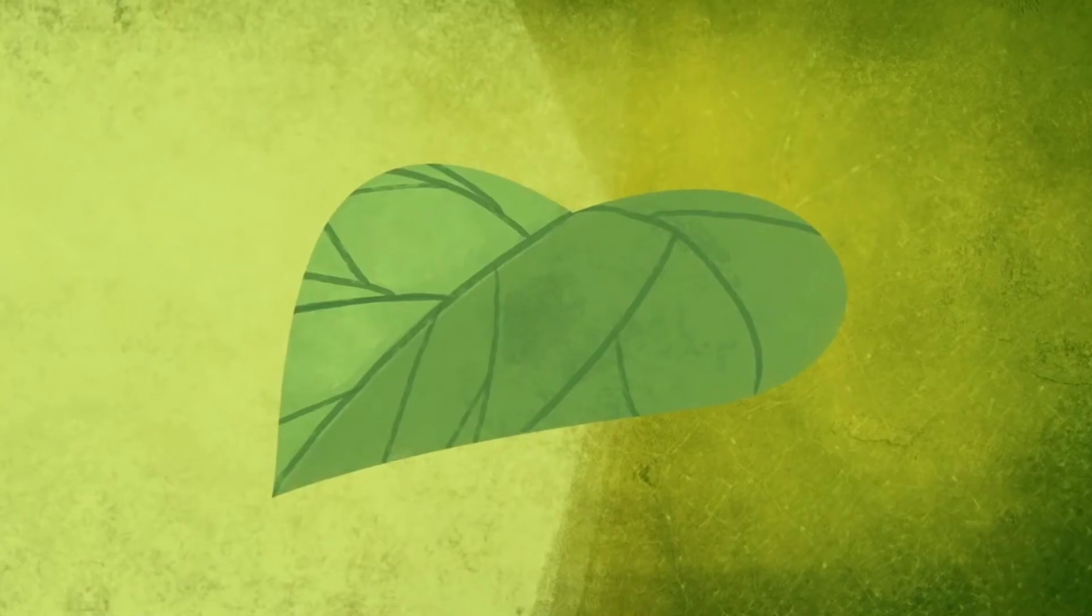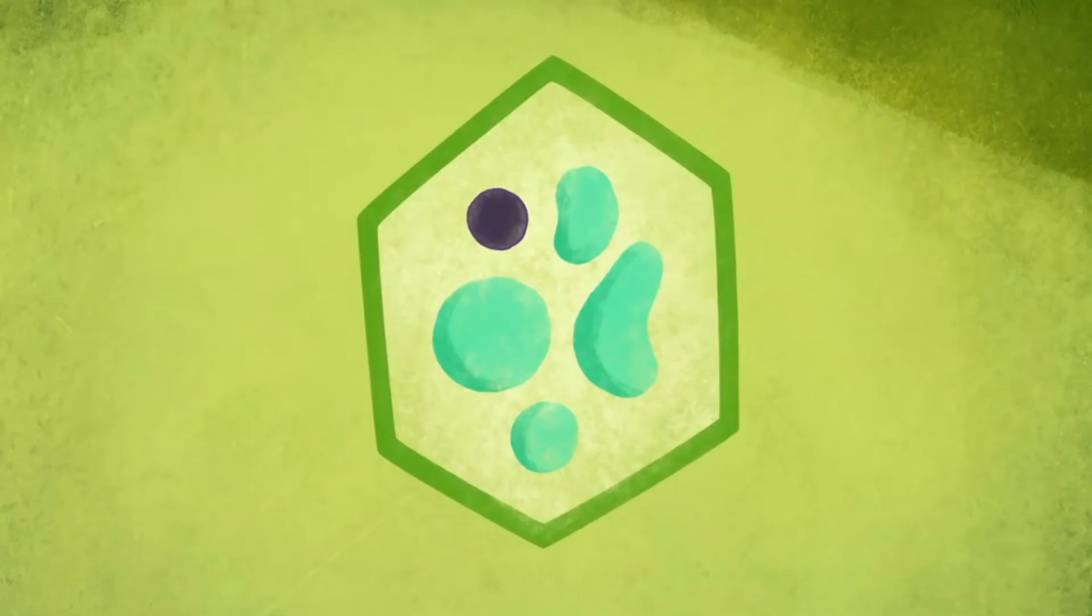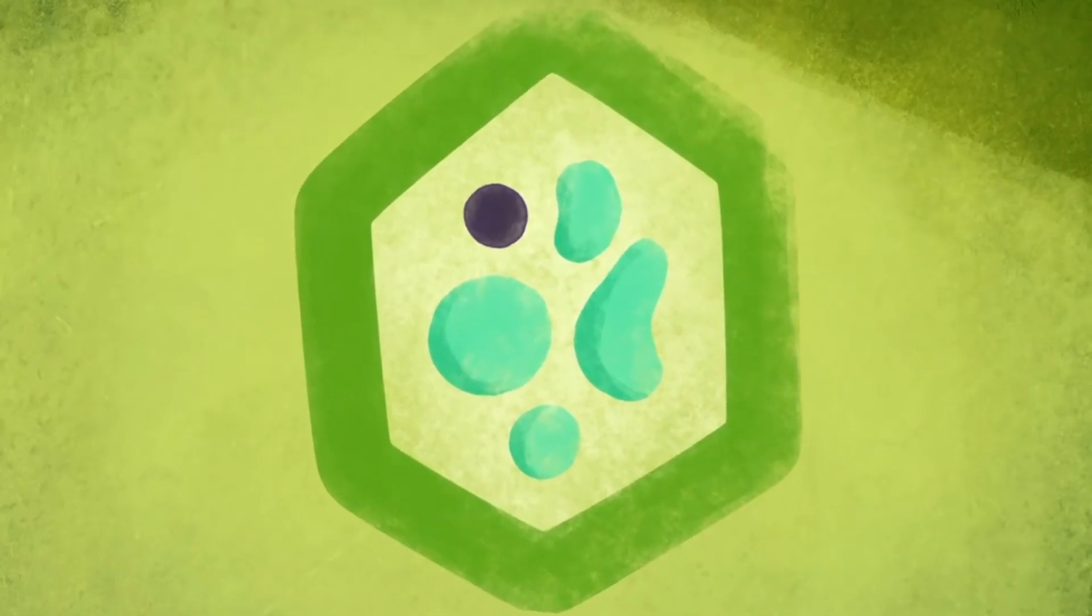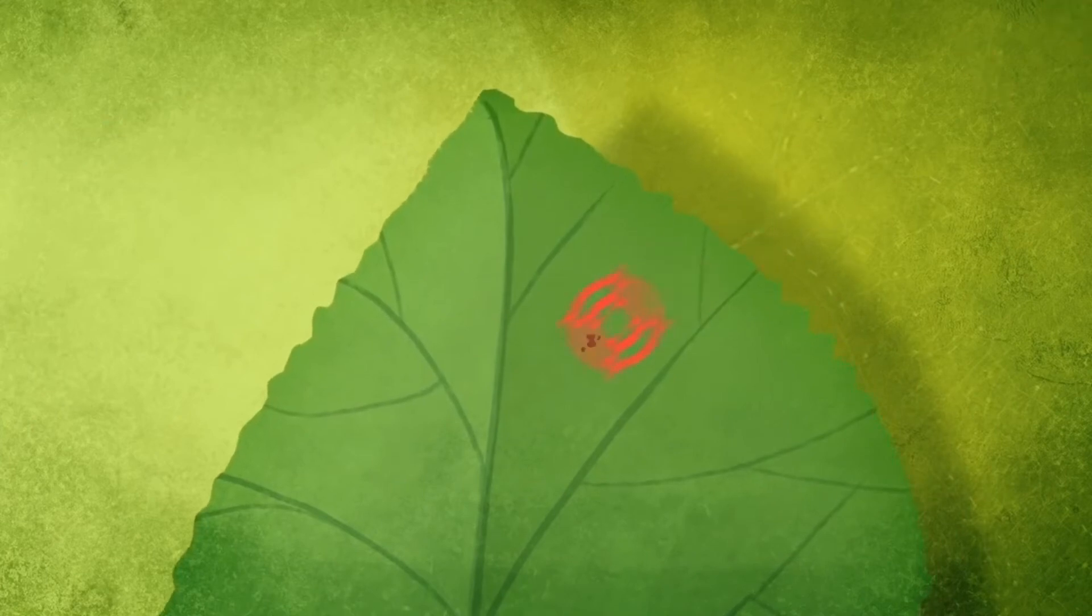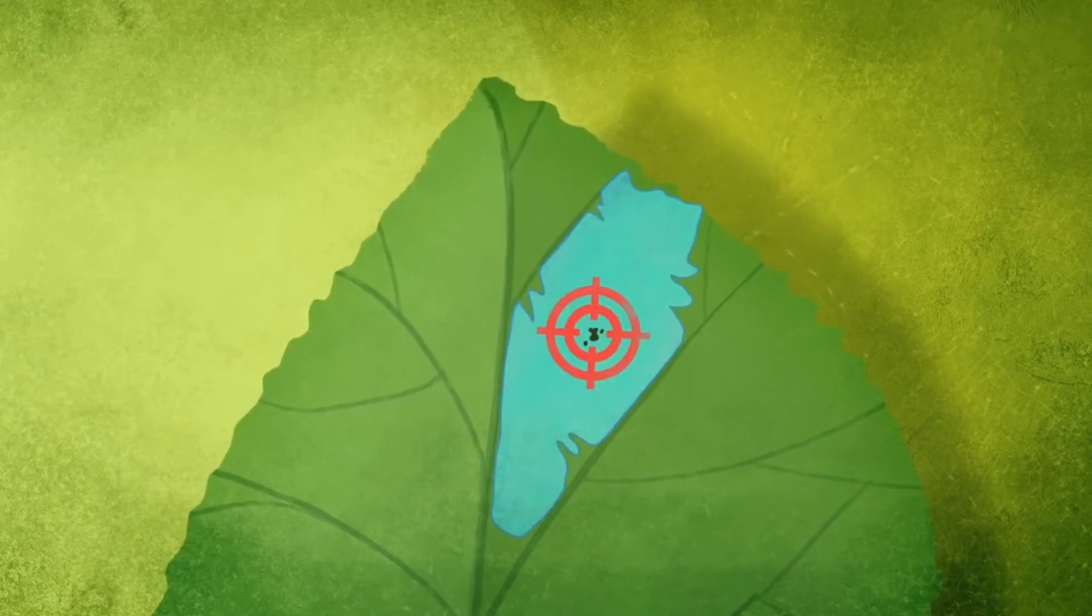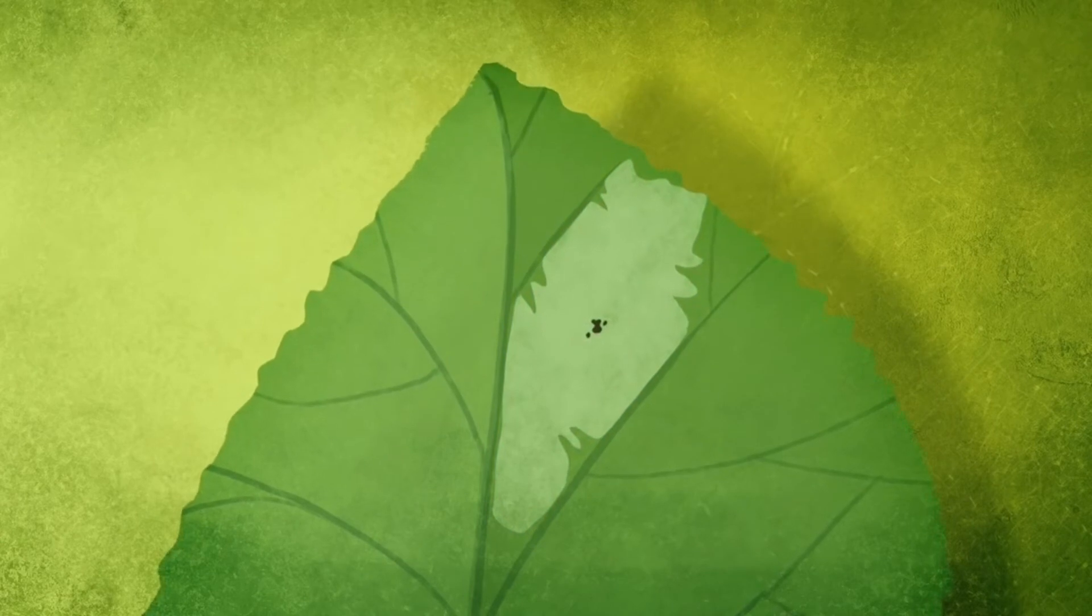To prevent more pathogens from making their way inside, the waxy cuticle thickens and cell walls get stronger. Guard cells seal up pores in the leaves. And if microbes are devouring one section of the plant, those cells can self-destruct to quarantine the infection.